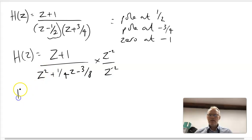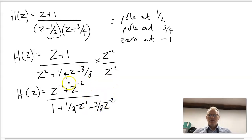If we do that, then we will end up with Z to the minus one, because Z to the one minus two is minus one, plus Z to the minus two. This will become one plus quarter Z to the minus one and then minus three eighths Z to the minus two.